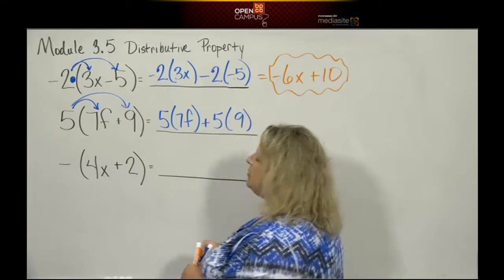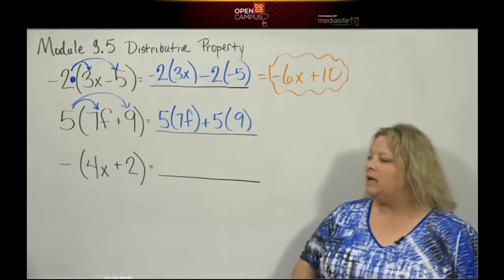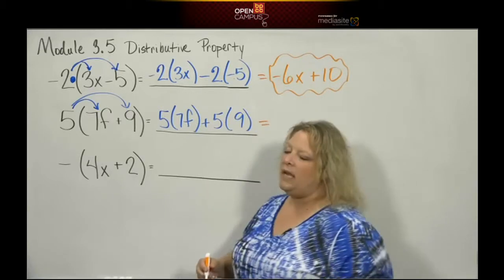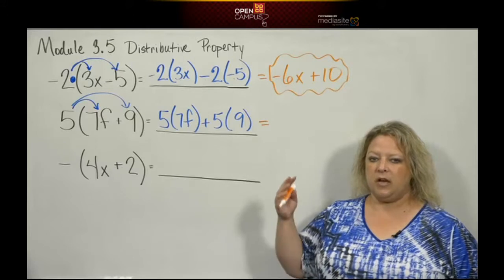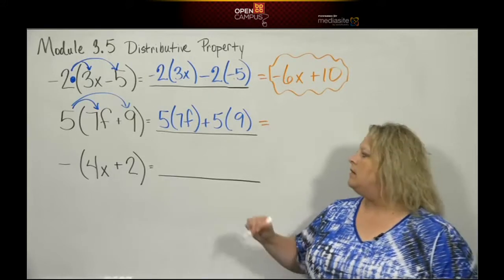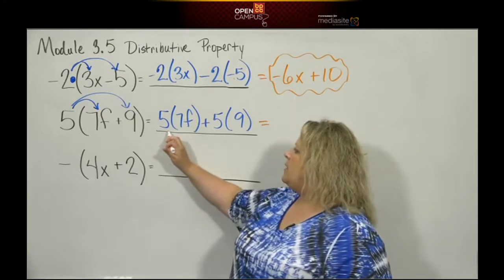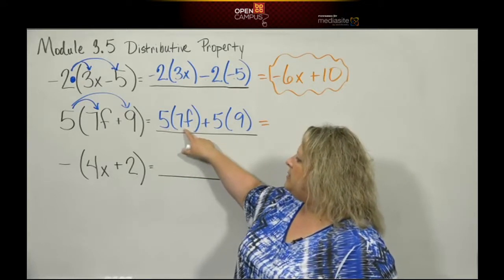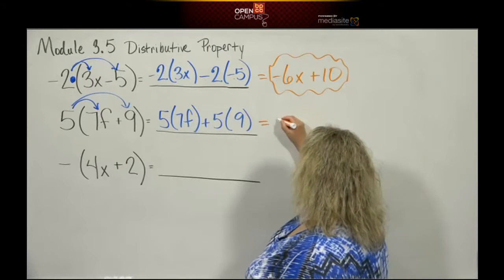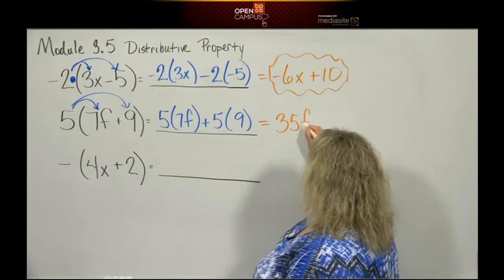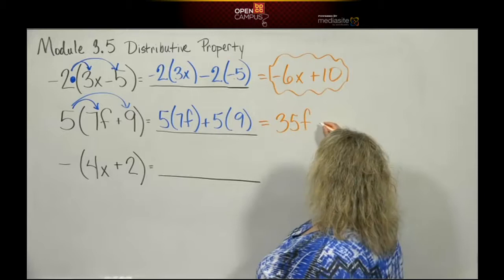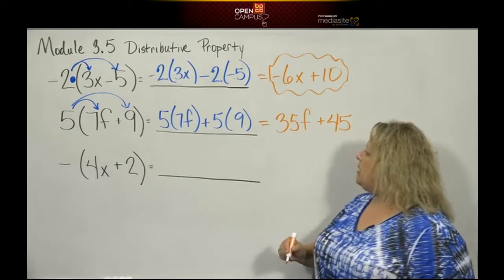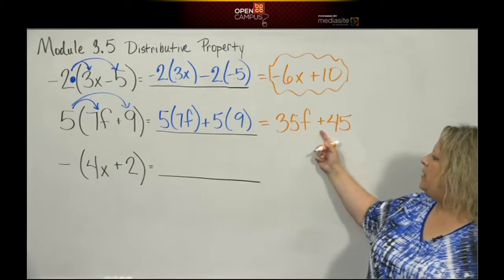Remember, if you wanted to do that step in your head, you can. Sometimes in the beginning it's easier to write it out. That way you can visually see what you're doing instead of trying to remember what you're doing. Sometimes we need that visual representation. We have 5 times 7 is 35, and that's f. And then 5 times 9 is 45, and everything's positive.